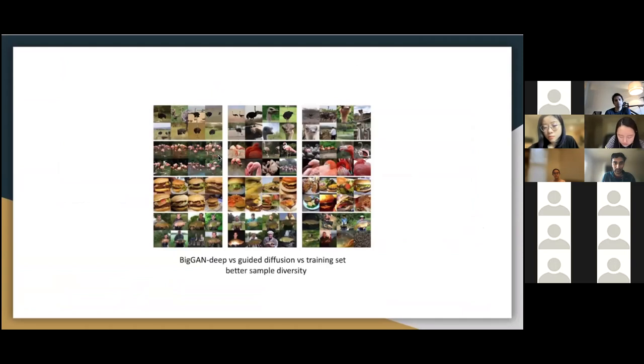And then I wanted to show some results comparing diffusion models to GANs. So these are GAN generated images, these are diffusion model generated images, and these are images from the training set. And so we can see the sample diversity issue from GANs where these images kind of all look the same and not capturing the diversity from here, but we see that the diffusion models don't have this issue. So that's pretty cool.